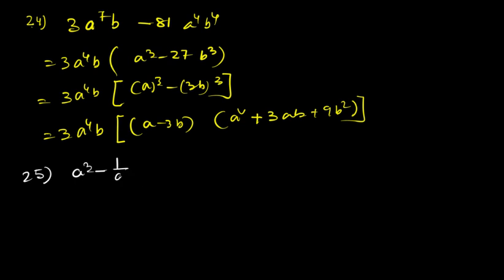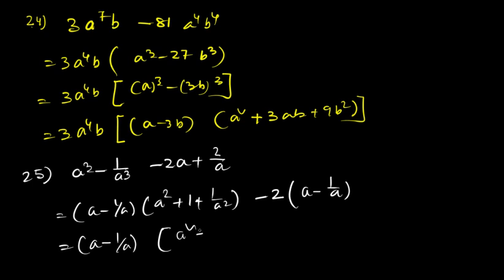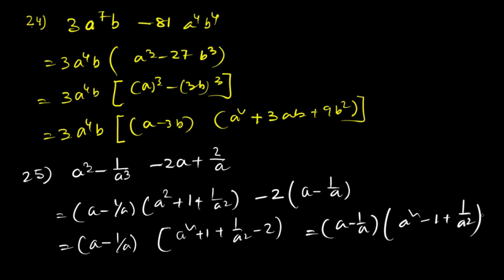Question 25: a³ – 1/a³ – 2a + 2/a. Recognising (a – 1/a)³ = a³ – 1/a³ – 3(a – 1/a), we factor out (a – 1/a) to get (a – 1/a)[(a – 1/a)² + 1] — i.e. (a – 1/a)(a² – 1 + 1/a²).